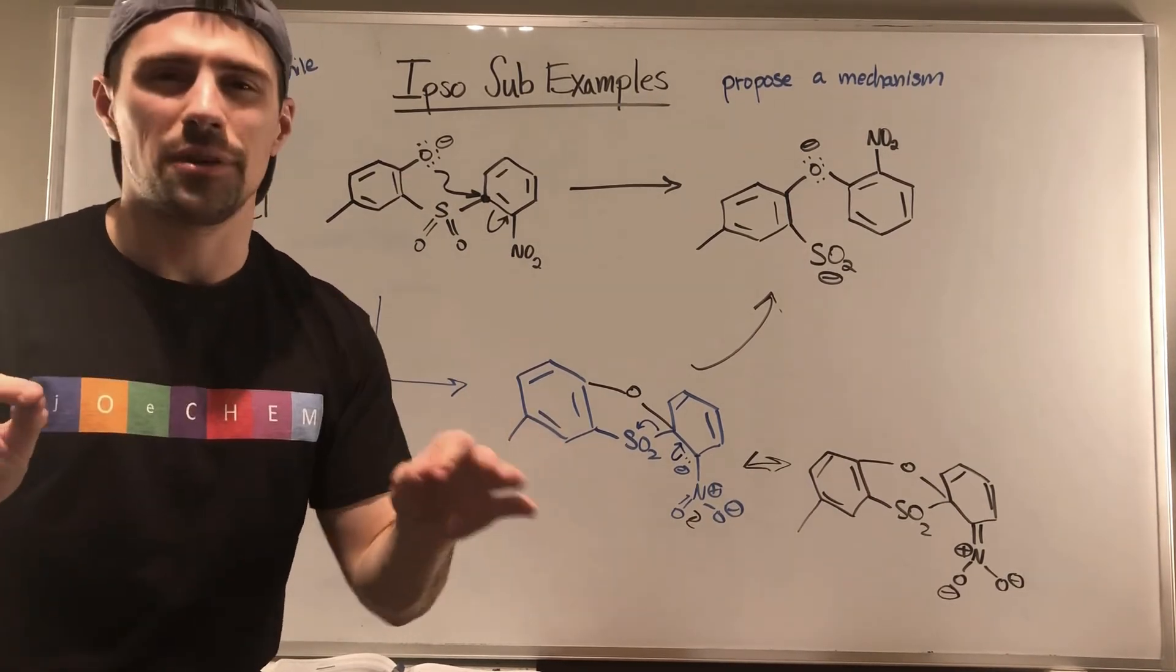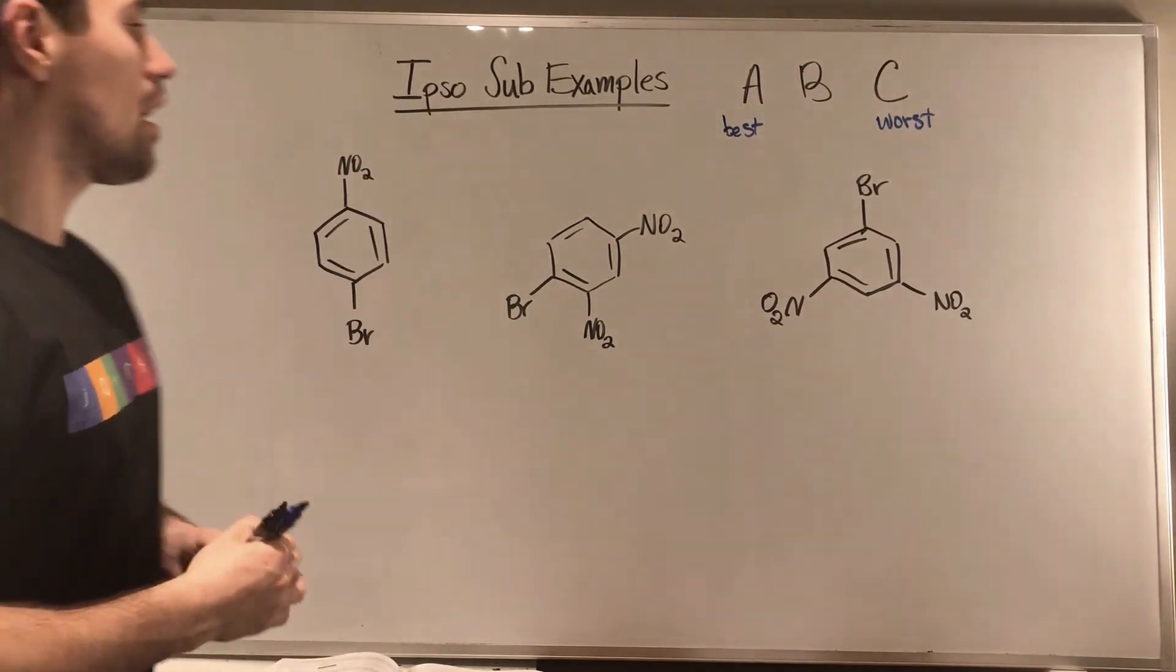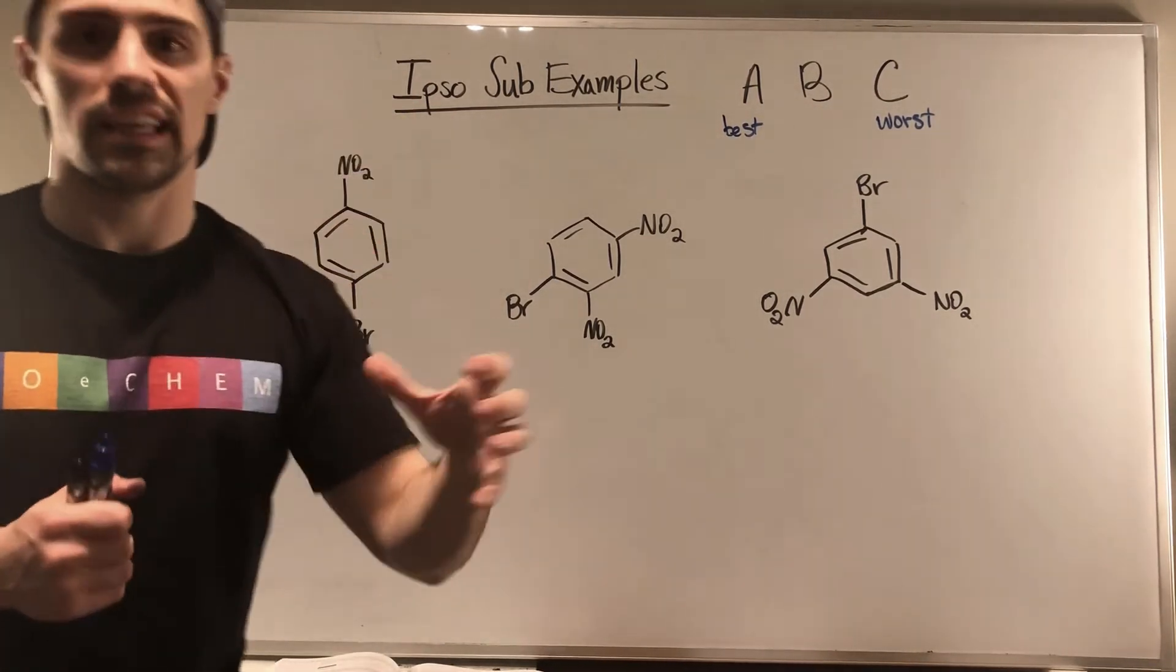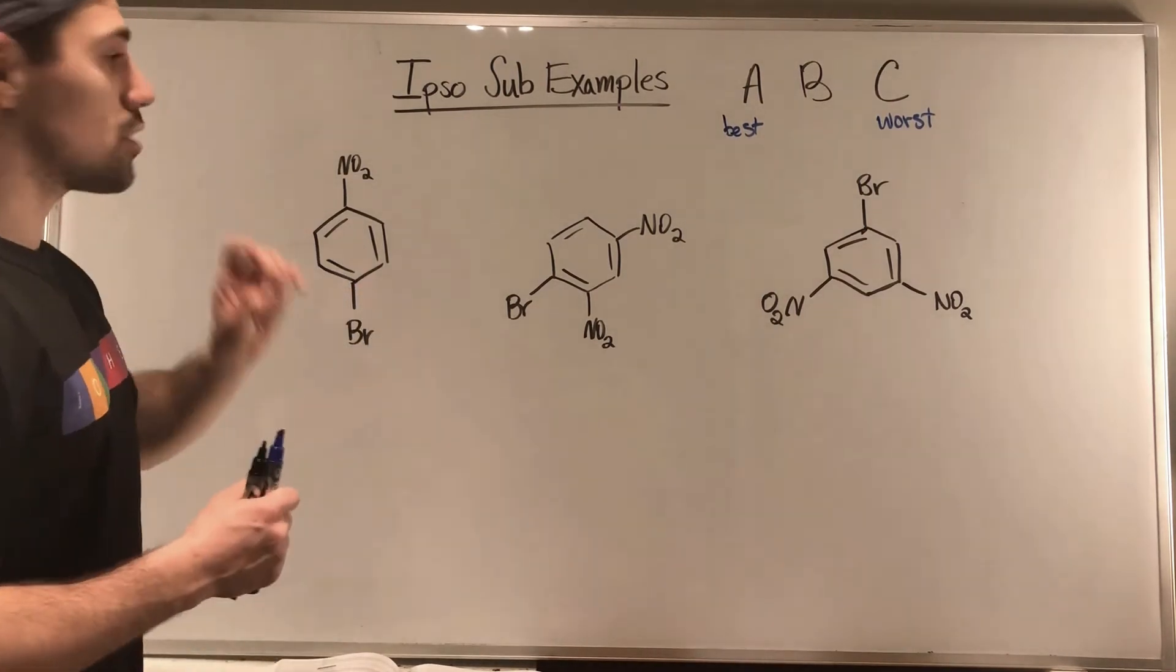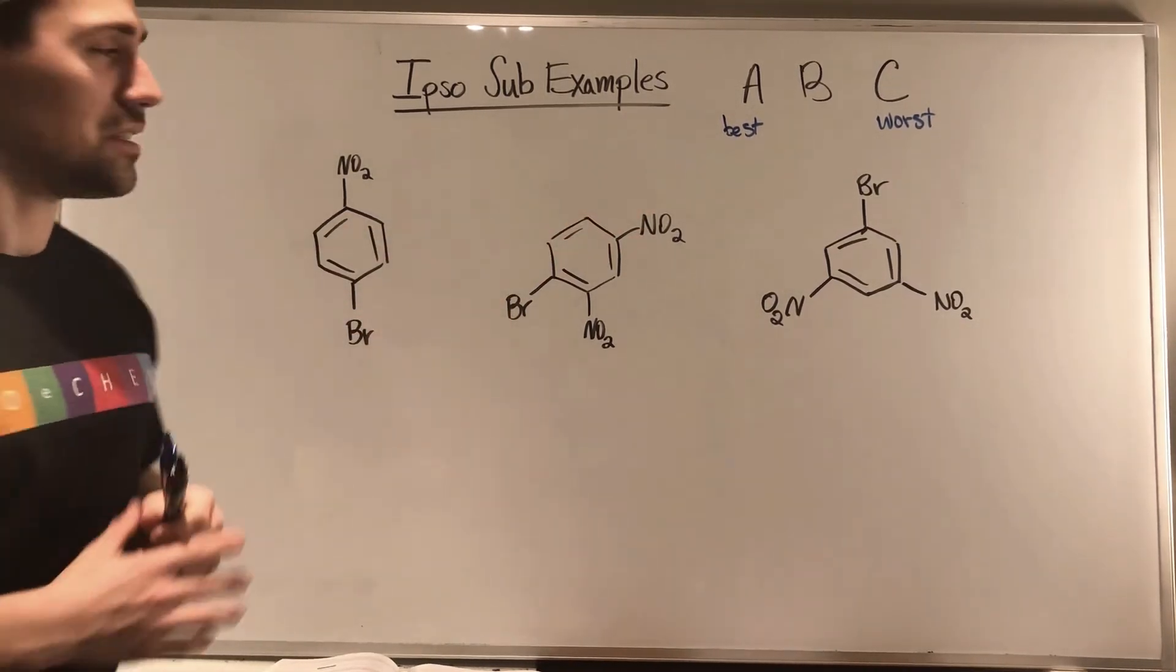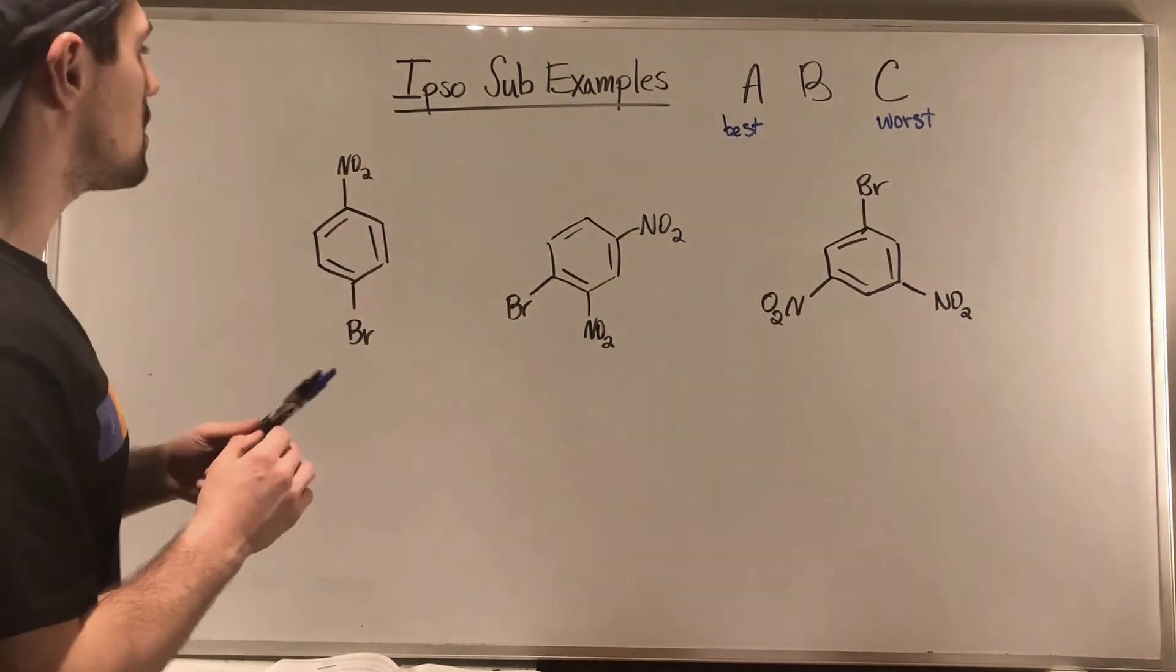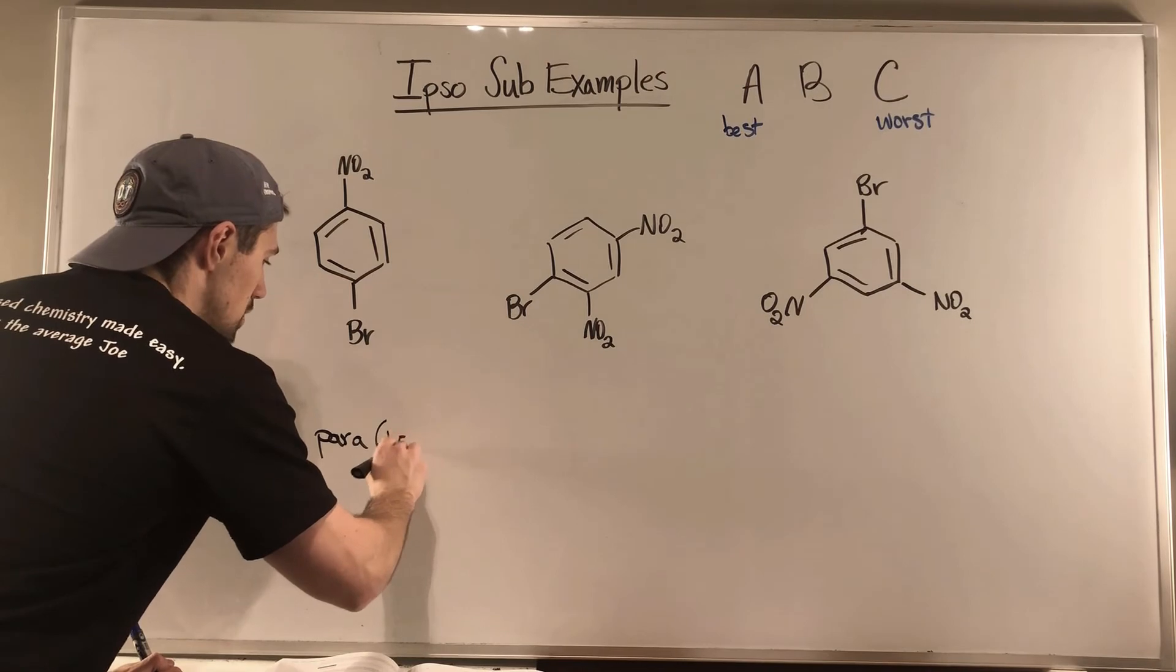Let's bring this video home. I'm going to give you three structures right here and I want to do the classic ABC ranking. We will assign the structure that is most likely to undergo a nucleophilic aromatic substitution reaction, an ipso substitution - that structure gets an A, and then the worst structure gets a C. Let's take a pass through. We have the same leaving group, bromine, and we have the same electron withdrawing groups. If we look here, we have a para relationship and one EWG.